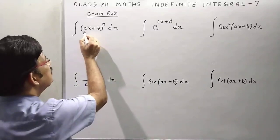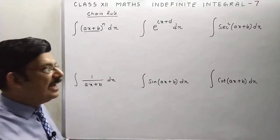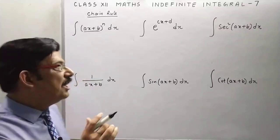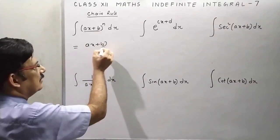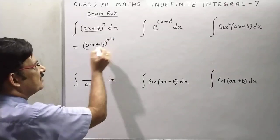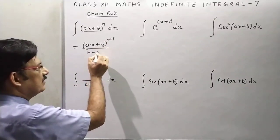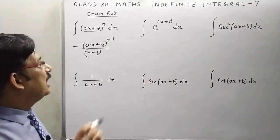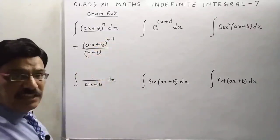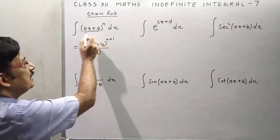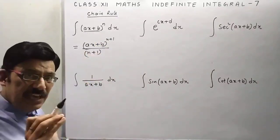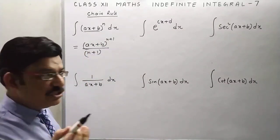So we have to suppose this as x. Let ax plus b be x in our mind. Now the formula is x to the power n plus 1 over n plus 1. This is the formula. Now differentiate that term which we have supposed. It means ax plus b, derivative of ax means a, and derivative of b means 0. So we have to divide by a, and constant is added always.